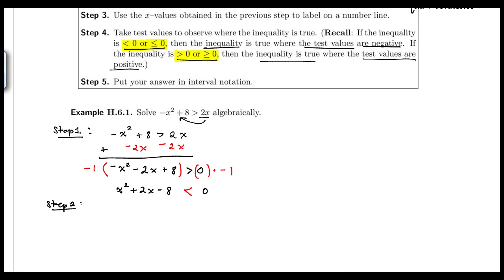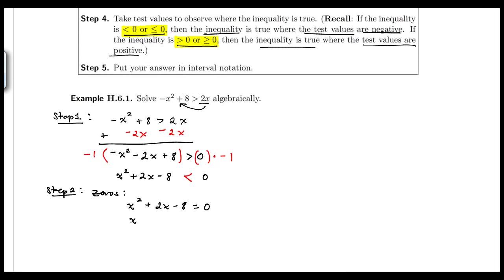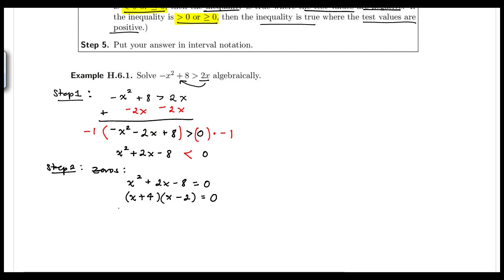Following step two, we find the zeros of the quadratic by setting x squared plus 2x minus 8 equal to zero. We can factor this as (x + 4)(x − 2) = 0. Using the zero product property, we get x plus 4 equals zero and x minus 2 equals zero, giving us x equals negative 4 and x equals 2 as our zeros.